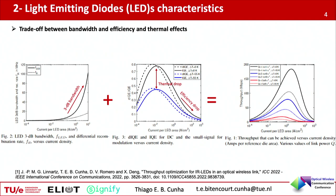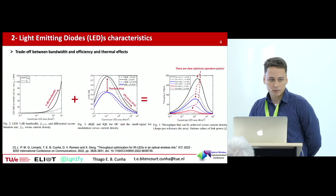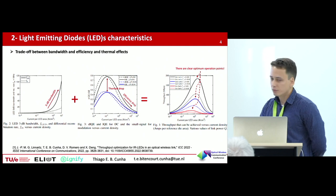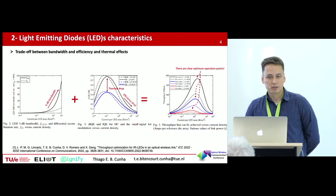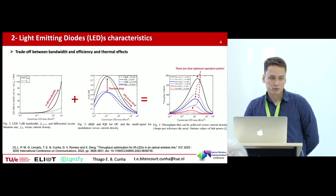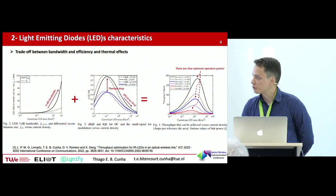So there is a clear optimal point at which, if we want to design a system that can provide high data rates, power is something important to think about. Also, there is a thermal drop — the performance of the system drops if the LED gets warm. So if we push a lot of power into the components, the performance drops. So it is power-constrained.